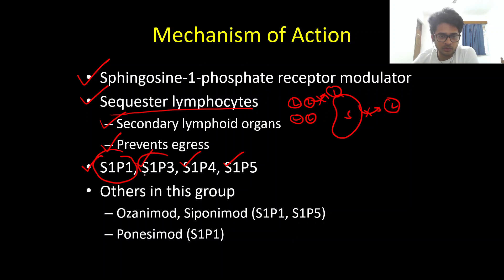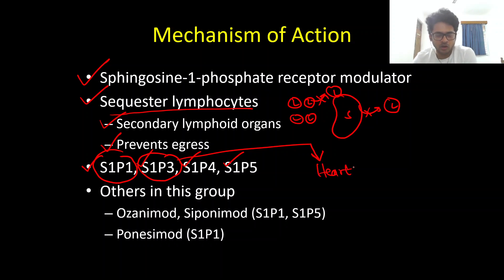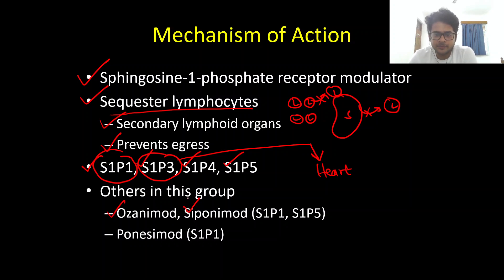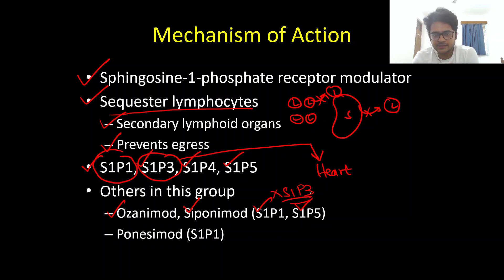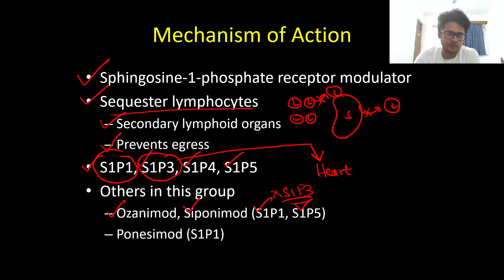S1P3 is an important subtype to remember because it is present in the heart, and the predominant cardiac complications of Fingolimod are due to its action on the S1P3 receptor. The newer drugs in this group, Ozanimod and Siponimod, act on S1P1 and S1P5 only — they do not act much on S1P3. That is why their cardiac side effects are comparatively less than Fingolimod, and you do not need to perform the routine 6-hour ECG monitoring before starting these drugs, unlike Fingolimod.